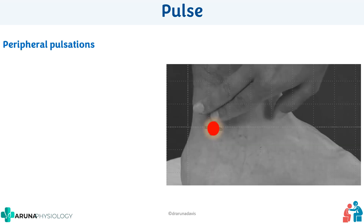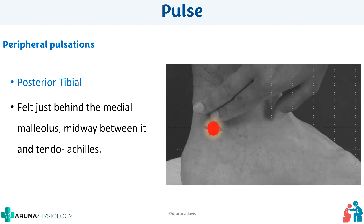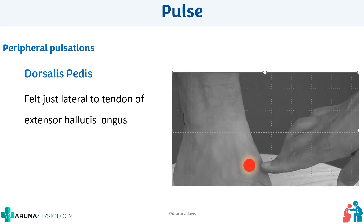The posterior tibial artery is felt just behind the medial malleolus, midway between the medial malleolus and the tendo Achilles — always in the medial part. The dorsalis pedis pulsation is felt just lateral to the tendon of the extensor hallucis longus, near the big toe, and can be absent in some individuals. That concludes our peripheral pulsations.